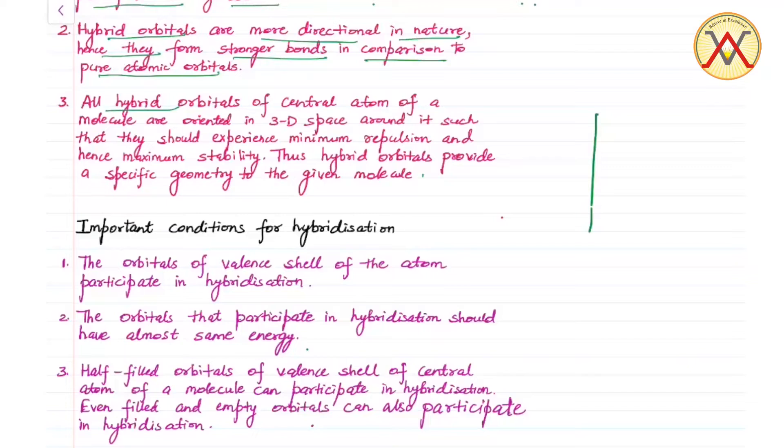All hybrid orbitals of central atom of a molecule are oriented in 3D space around it such that they should experience minimum repulsion and hence maximum stability. Thus hybrid orbitals provide a specific geometry to the given molecule.